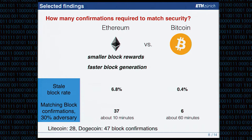We can also quantify security for other blockchains like Litecoin and Dogecoin, or any other reparameterization: 28 Litecoin blocks would be equivalent to 6 Bitcoin blocks, and 47 Dogecoin blocks would be equivalent to 6 Bitcoin blocks.